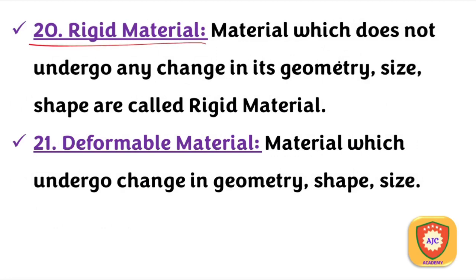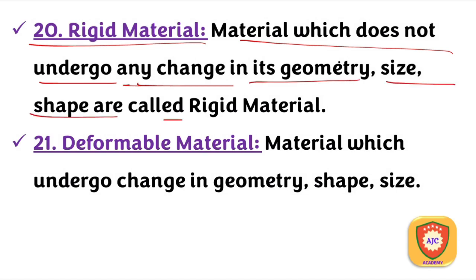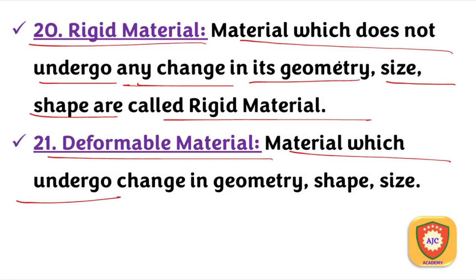A rigid material does not undergo any change in its geometry, size, or shape when a load acts on it. A deformable material undergoes changes in geometry, shape, and size when a load is applied.